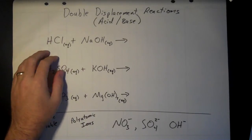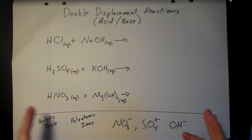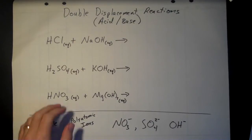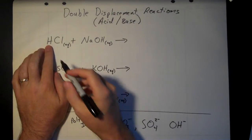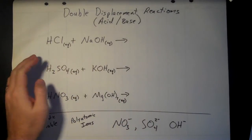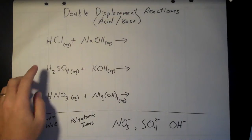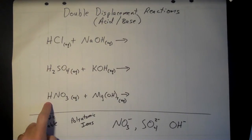For double displacement reactions, we're going to bring one of each cation and one of each anion over, swap the anions between the cations to come up with our products, just like we did in the previous video. With an acid-base reaction, how you identify an acid — it's typically going to start with hydrogen in the formula.